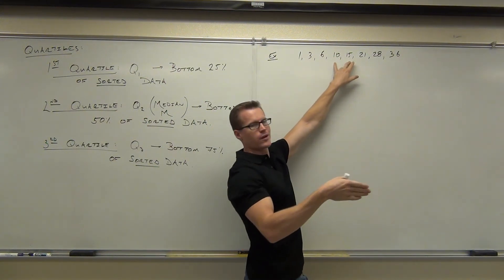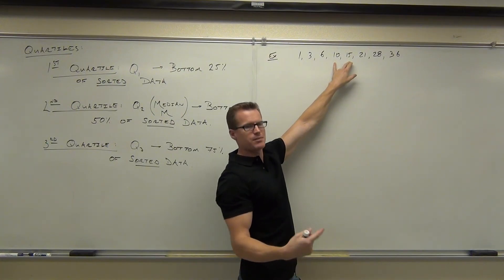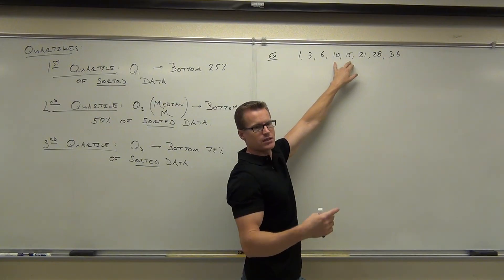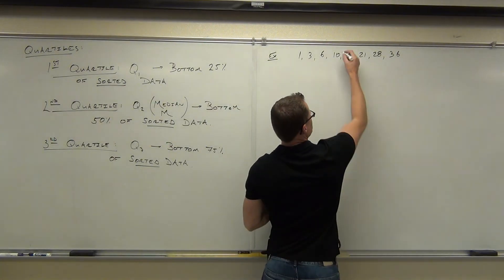And we have to pick the number right in the middle, or in other words, the arithmetic average of this, the mean of these two numbers. So you add them together, you get 25. You divide by 2, you get 12.5. Great. So our median, 12.5.